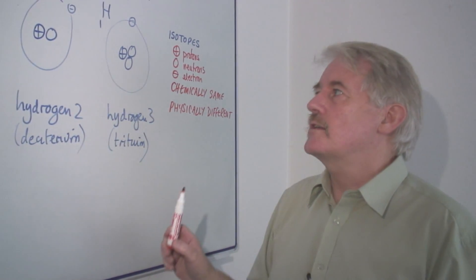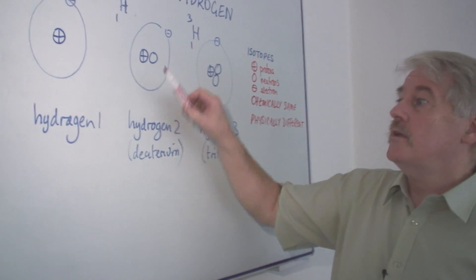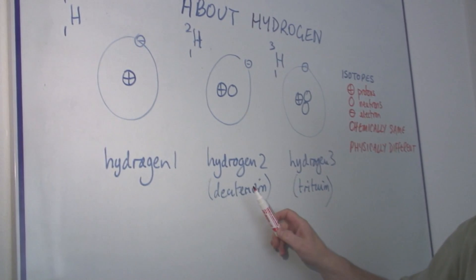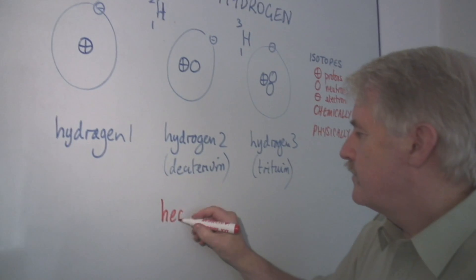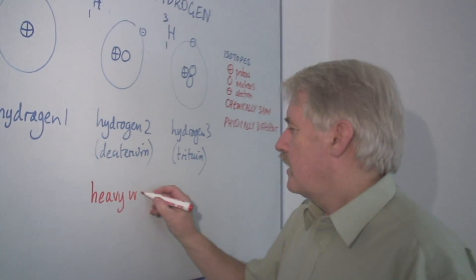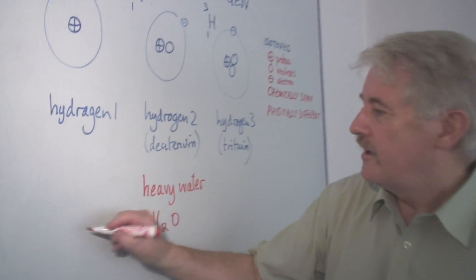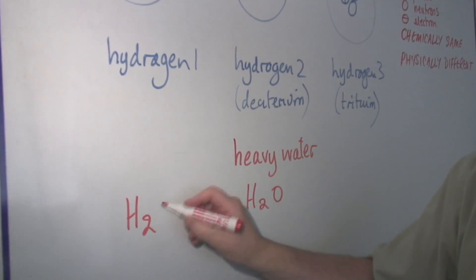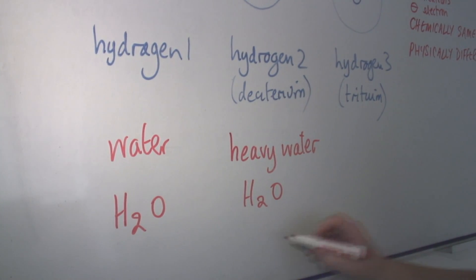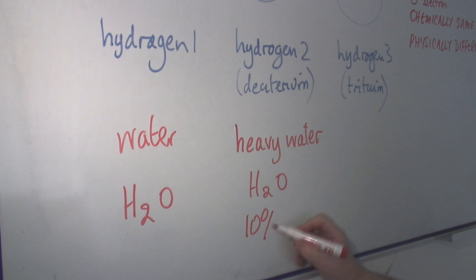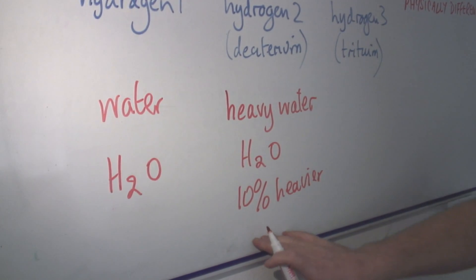Hydrogen is interesting because hydrogen two is twice as heavy as hydrogen one. And from hydrogen two we can get heavy water. We call it heavy water because it's H2O — this is also H2O — but this is just ordinary water. And in fact this is about 10% heavier for the same amount of water, so it's significantly heavier.